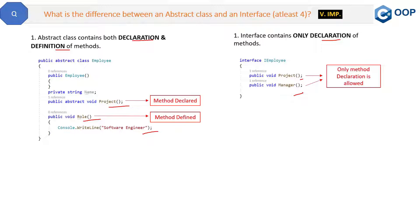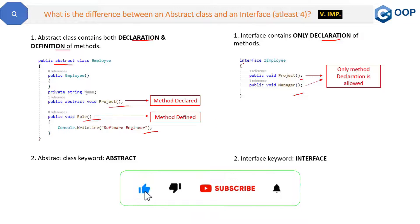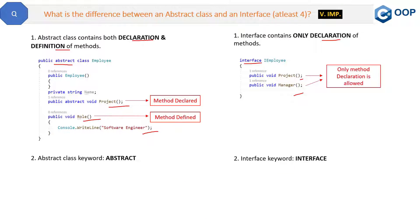Now let's come to the second difference. The second difference is quite obvious — abstract class uses the abstract keyword, as you can see here. And interface uses the interface keyword, as you can see in the code. So this is the second and simplest difference.